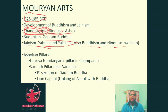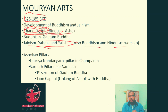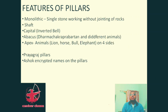Ashoka himself converted to Buddhism after fighting the Kalinga war. After witnessing the destruction, his mind changed and he embraced Buddhism. To show his connection with Gautam Buddha, he created many Buddhist arts, including the Lion Capital and Buddhist stupas.